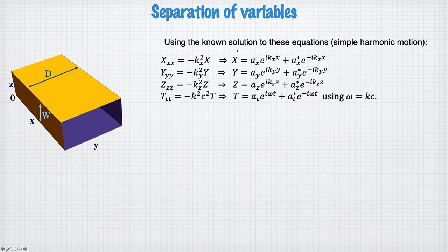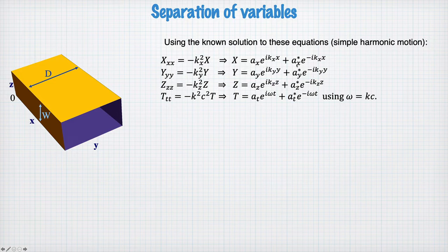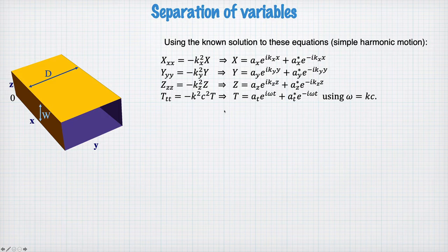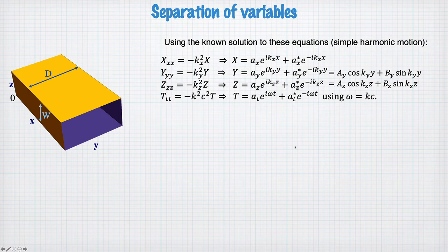Having derived the simple harmonic motion equations, we can write the known solutions in terms of complex exponentials and their conjugates, where the a's are amplitudes and the frequency omega equals k times c. For the y and z components, we rewrite the solution in terms of cosine and sine functions to make it easier to apply the boundary conditions.